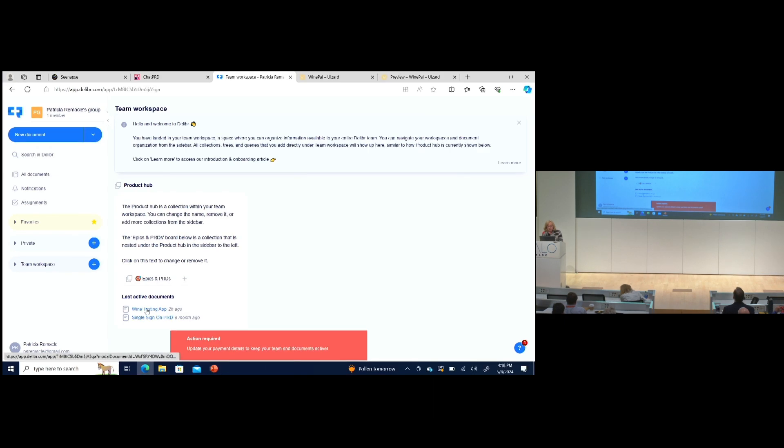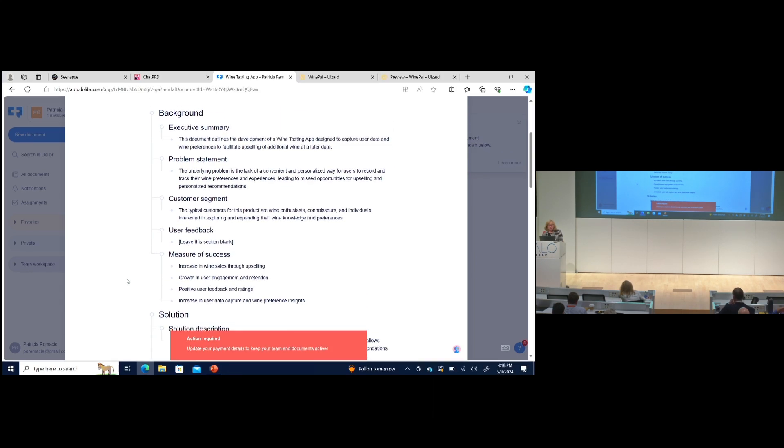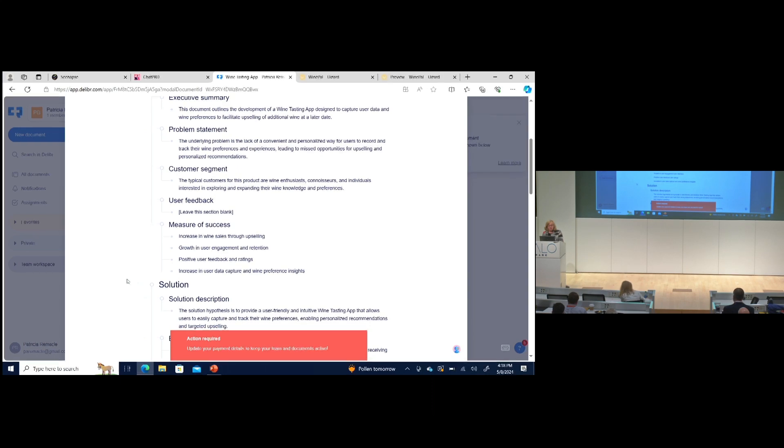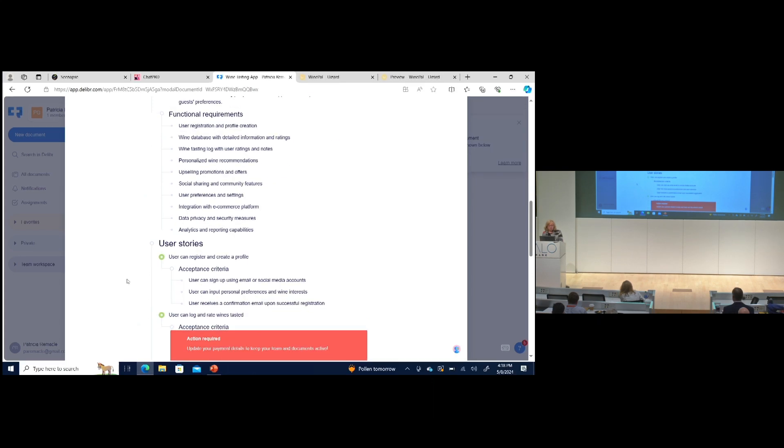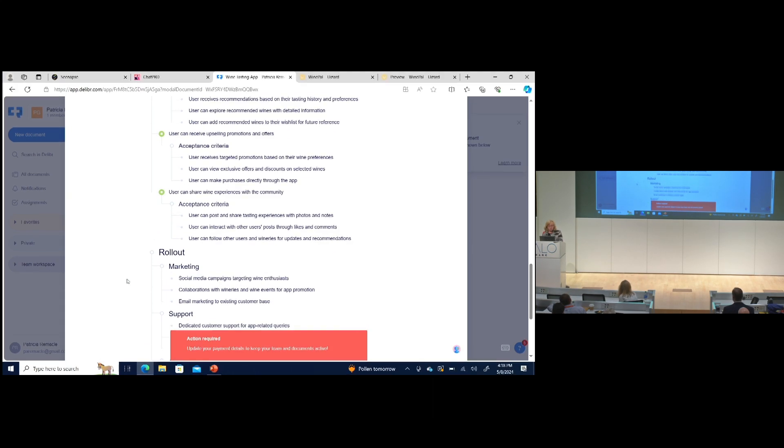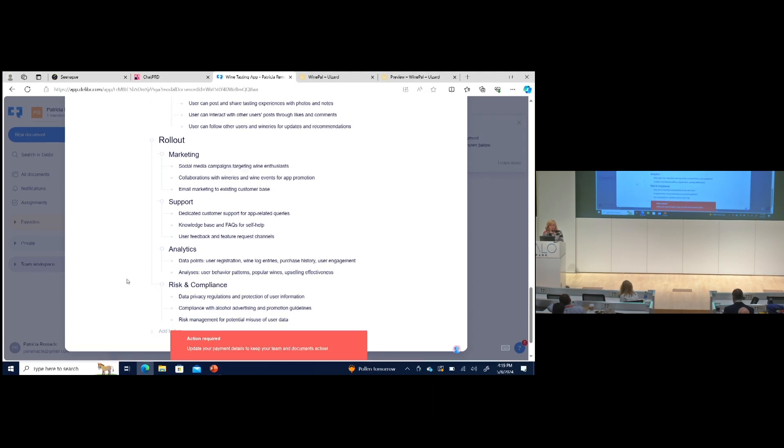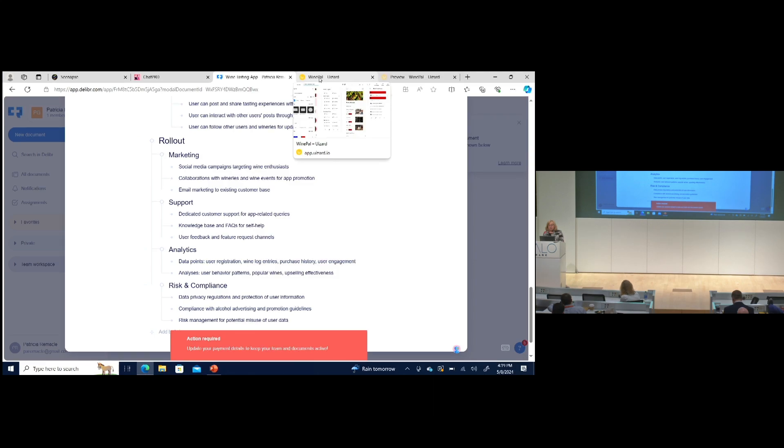Delabra is the competing one. Here's the PRD it created. It has an executive summary, problem statement, who the customer segment is, measures of success, functional requirements, user stories. They went into a little bit more detail. What's the acceptance criteria for each user story? What's your rollout? What's your launch strategy going to look like? How are you going to roll this out? What are your risks and considerations? Each of these tools allow you to modify the template that you want to use for your PRDs. They're very easy to work with and very conversational.